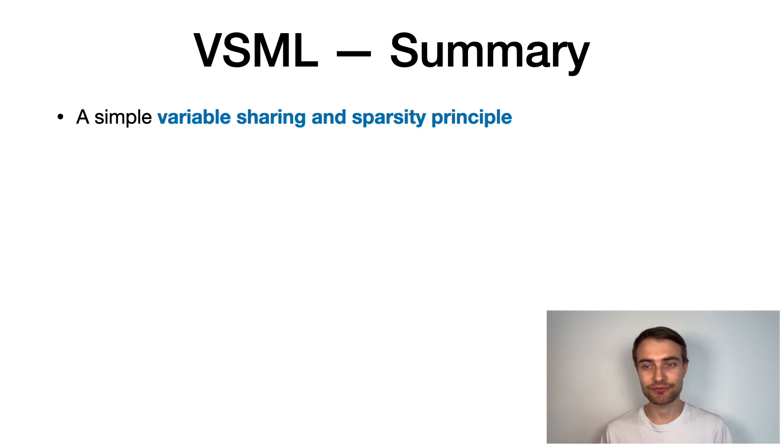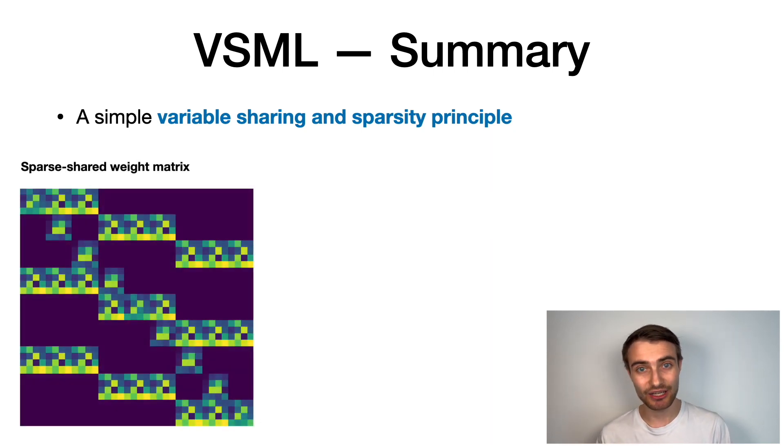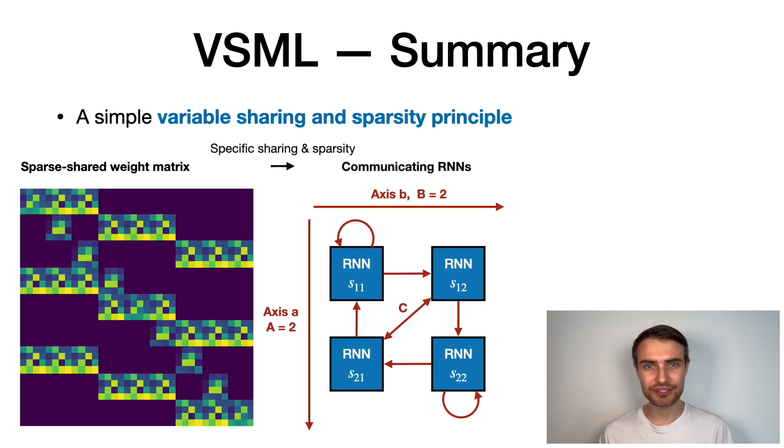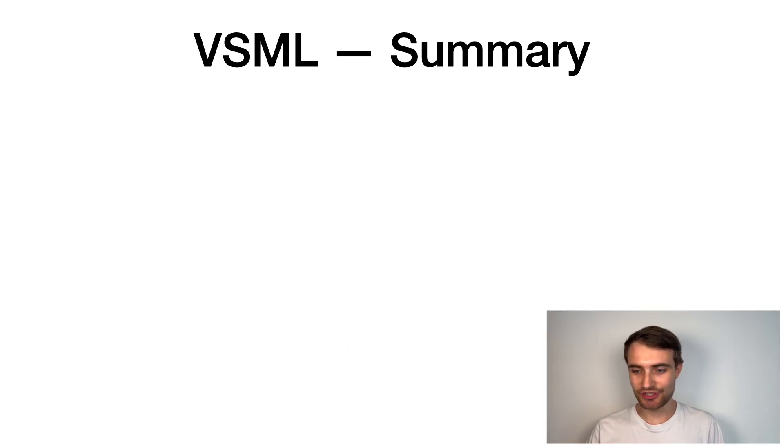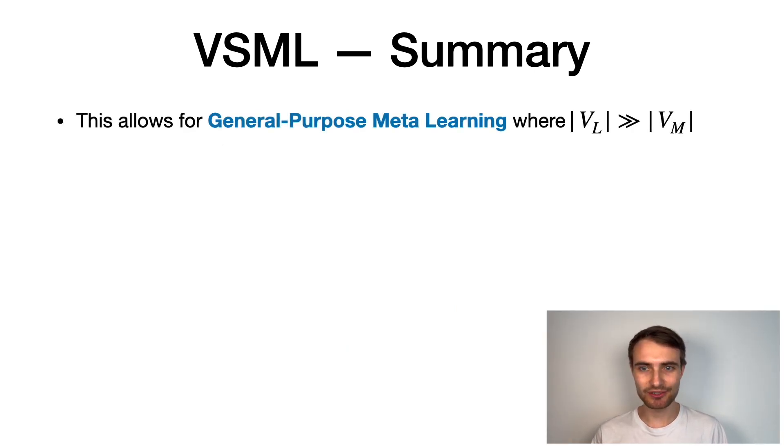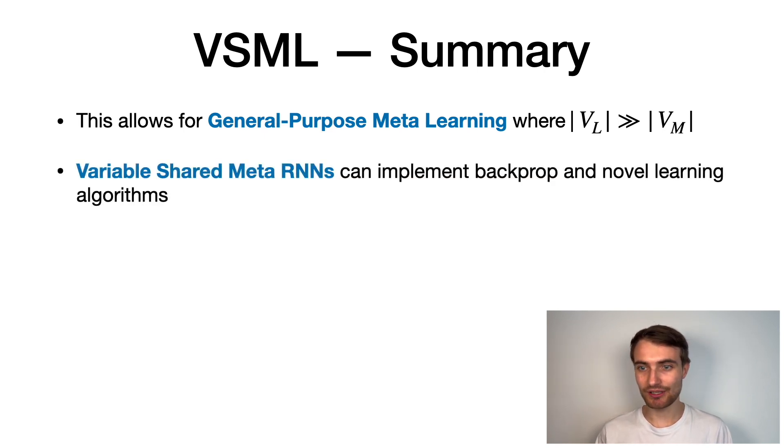So, in summary, we have introduced variable shared meta-learning, a simple variable sharing and sparsity principle that leads to three interesting interpretations. A sparse shared weight matrix, and when using a specific sharing and sparsity scheme, we can implement RNNs that pass messages between each other. And when we select a specific connectivity between these RNNs, we can interpret RNNs as replacing weights and implementing weight updates. VSML allows for general-purpose meta-learning, where the number of learned variables is much bigger than the meta-variables. We can meta-learn backprop and novel learning algorithms in the recurrent dynamics of those RNNs.